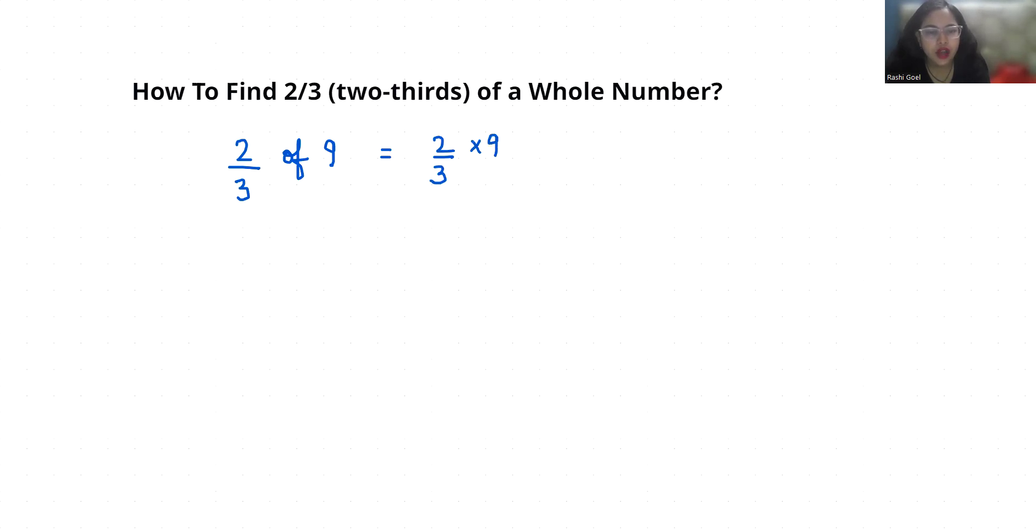So we will cancel out this 9 with 3. So this gives us 3. So 2 times 3 is 6.